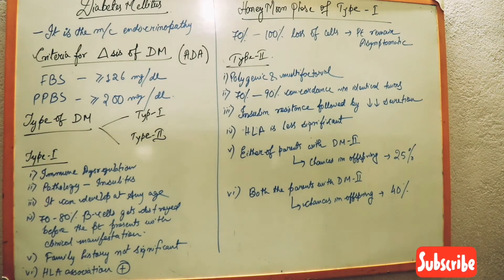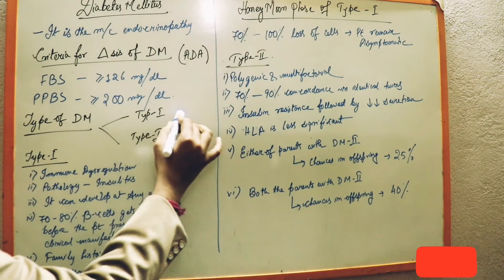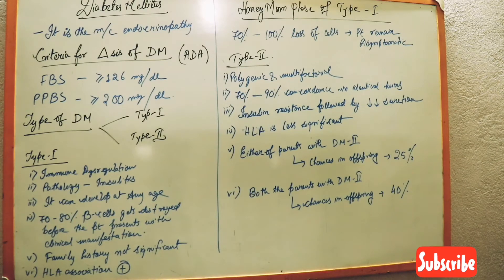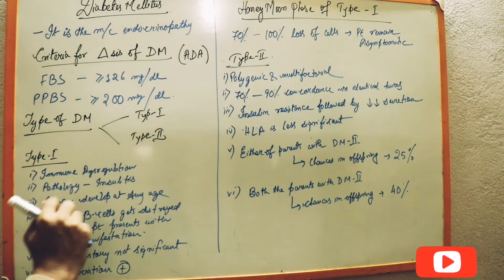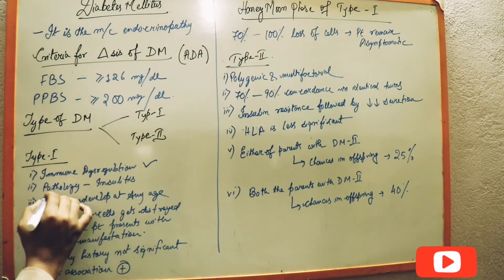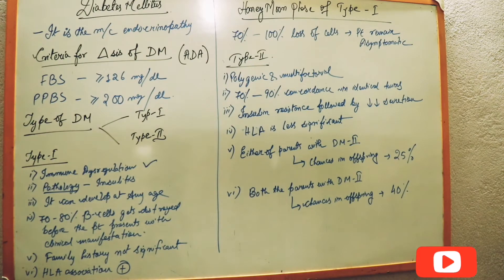Now what are the types of diabetes mellitus? We have two types: type 1 and type 2. Now in type 1, the features of type 1: it is immune dysregulation. From the pathology point of view, it is insulitis.